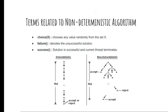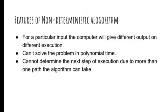Here you can see the variation between deterministic and non-deterministic algorithm features. For a particular input, the computer will give different output on different executions. It cannot solve the problem in polynomial time and cannot determine the next step of execution due to more than one possible path.